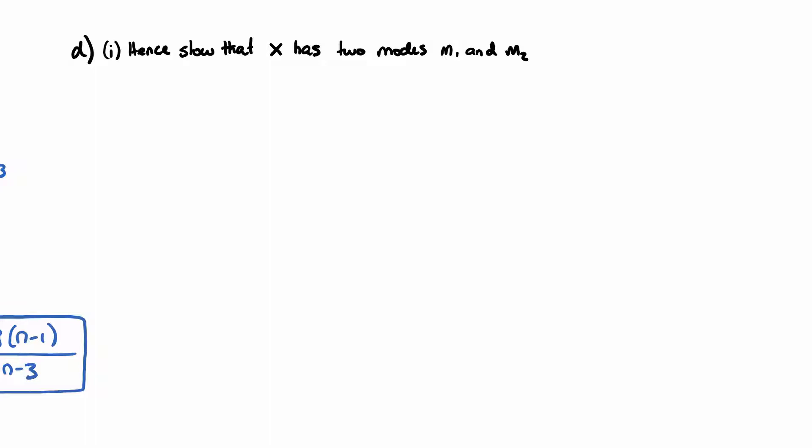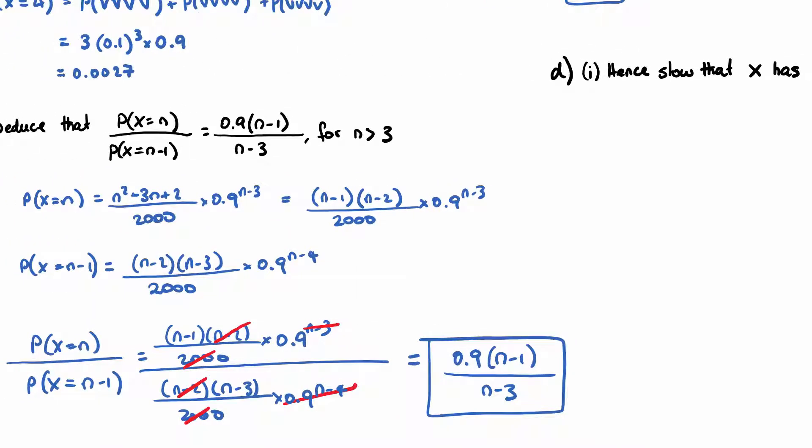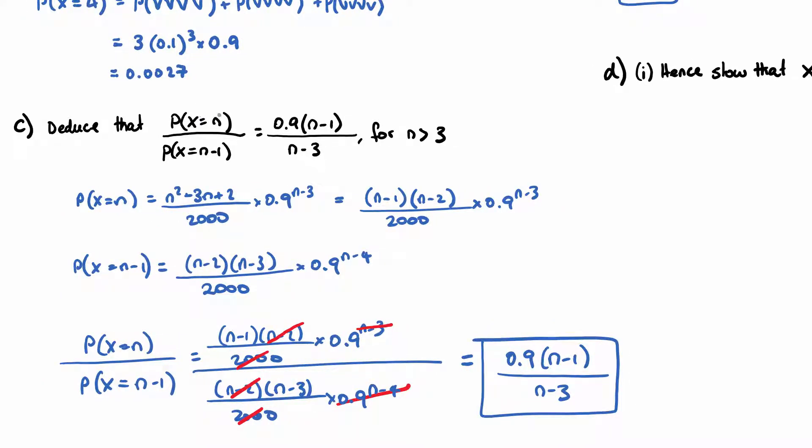So mode will be the most common outcome. Now this has to do with part C because we've essentially got the probability of some score of N divided by the previous number. Now if this divided by this is equal to 1, that means the probabilities of some score of N and the one before it will be the same. Because if there's a probability over a probability and it's 1, it's the same decimal top and bottom.